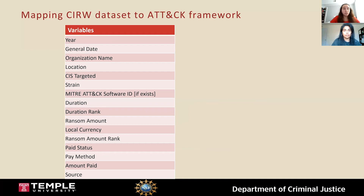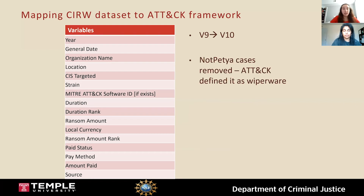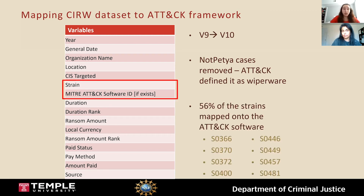Moving on to the critical infrastructure ransomware data set, our variables record information about the date and location of the attack, who is targeted, what strain of ransomware is used, and details about the ransom. In our transition from the ninth to the tenth iteration of the data set, we began mapping onto the ATT&CK framework. We first removed all incidents where the strain was recorded as NotPetya, as the ATT&CK framework defines NotPetya as wiperware and not ransomware. We then mapped the ransomware strain variable onto the ATT&CK software ID. About 56% of the strains mapped onto the ATT&CK software. The eight softwares that appeared repeatedly in our data set included Maze, LockerGoga, NetWalker, RagnarLocker, Robinhood, Ryuk, SamSam, and WannaCry.